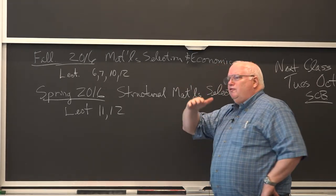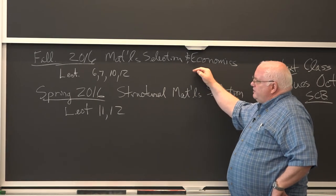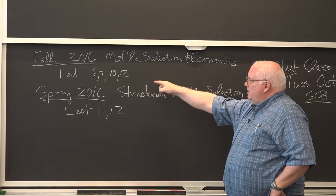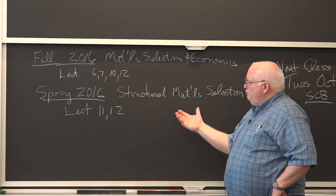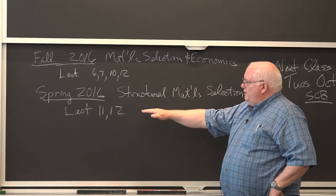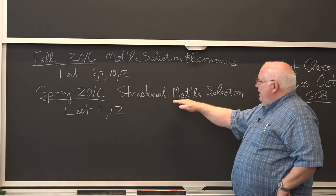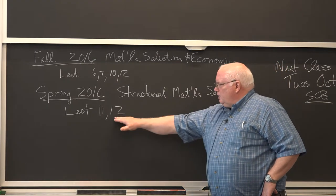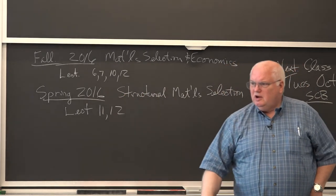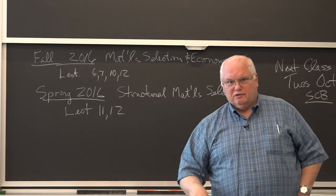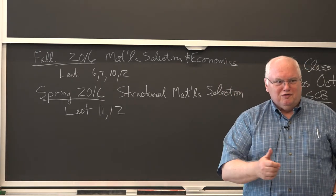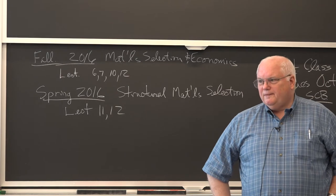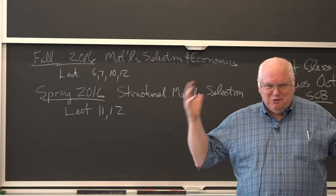To finish up your twelve lecture modules, I did this stuff back in 2016 in the fall. If you do lectures 6, 7, 10, and 12, there's not going to be too much overlap. If you look at spring 2016, I did structural material selection. That would be your next six lectures to complete this module. This semester is a little weird because you're on twelve lecture modules and we're in this transition where we're going to go to six lecture modules. You're not going to be quizzed on it anyway, so who cares?